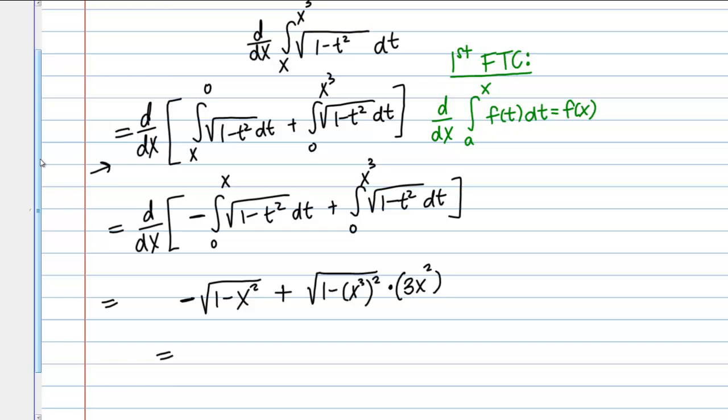If I clean this up a little bit then, I get negative root of 1 minus X squared plus 3X squared square root of 1 minus X to the 6th. That is my final answer.